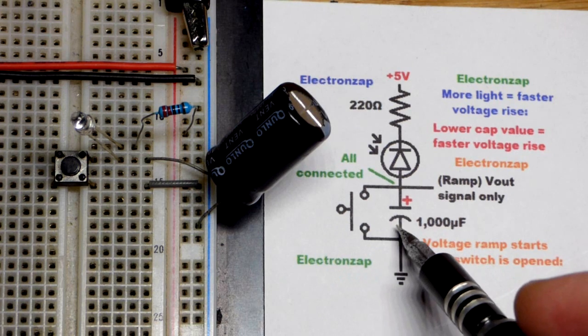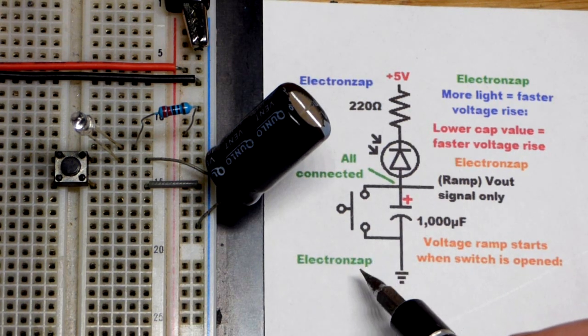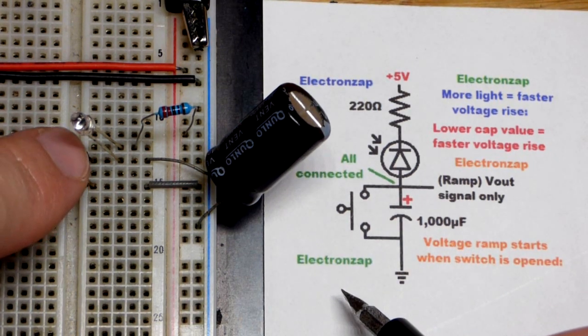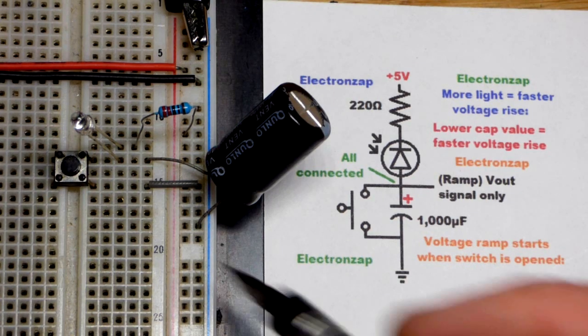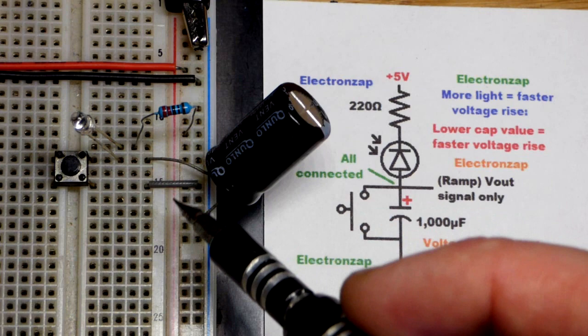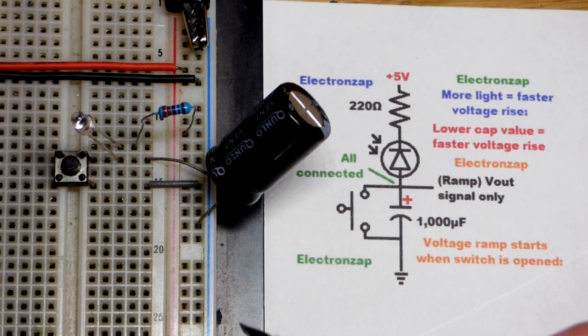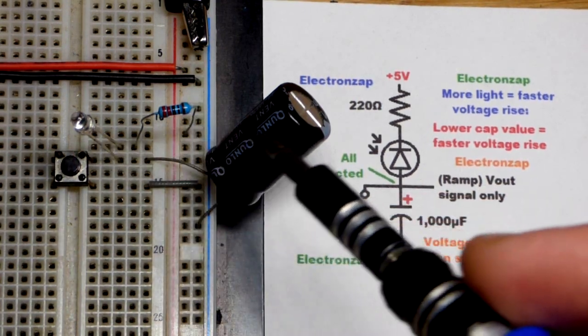Then when we release the switch that's when we get our ramp. And so we saw that. When I pressed the button voltage went down to nothing. And that's because we had the capacitor discharge there through that path. When I released it then the capacitor could charge.